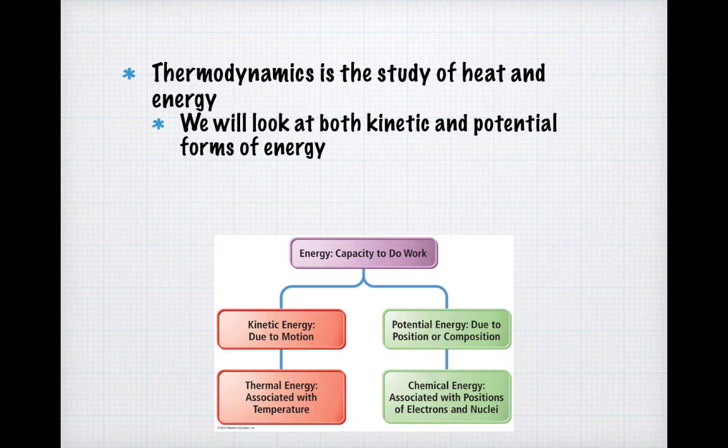Kinetic energy is energy that is due to motion. In chemistry, this is most often referred to as thermal energy, because any time we measure the temperature of something, we're really measuring the kinetic energy of the atoms and molecules in that sample. Potential energy in physics is due to position, but in chemistry it's more due to composition. Chemical energy is associated with positions of electrons and nuclei and the bonds that exist between them.